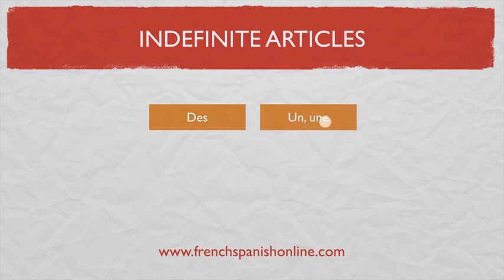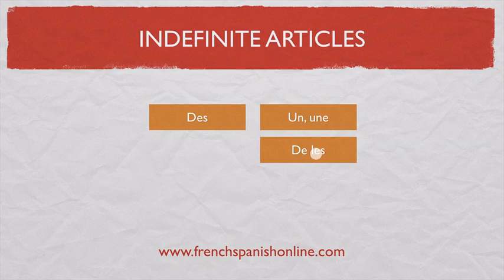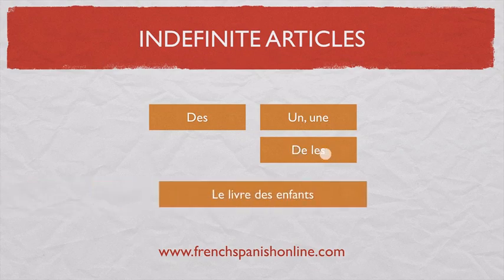If you remember the lesson about the definite article, you know that 'des' is also the contraction of 'de' and the definite article plural form 'les' — because we don't say 'de les', we say 'des' instead. So 'des' can be an indefinite article, or a definite article contraction of 'de les'. Let's take some examples to compare.